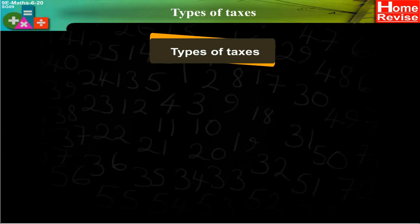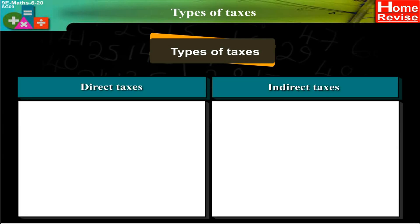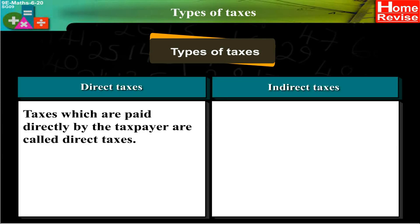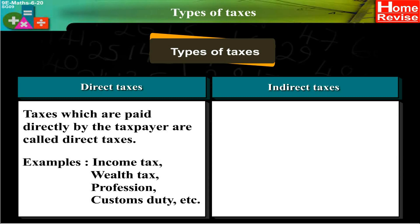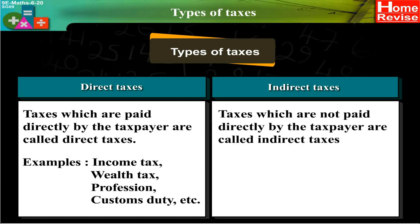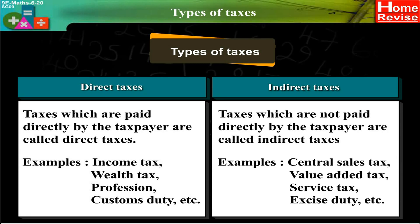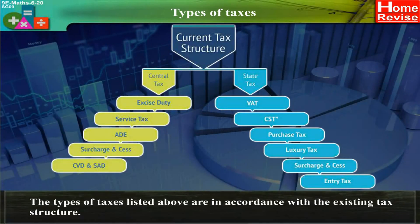Types of Taxes: Direct Taxes and Indirect Taxes. Taxes which are paid directly by the taxpayer are called Direct Taxes — for example, Income Tax, Wealth Tax, Profession Tax, Customs Duty, etc. Taxes which are not paid directly by the taxpayer are called Indirect Taxes — for example, Central Sales Tax, Value Added Tax, Service Tax, Excise Duty, etc. The types of taxes listed above are in accordance with the existing tax structure.